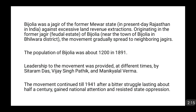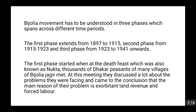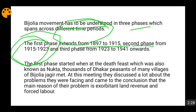Moving forward, the Bijouliya movement has to be understood in three phases because it is covered across three different time periods. The first phase is 1897 to 1915, the second phase from 1915 to 1923, and the third phase from 1923 to 1941.